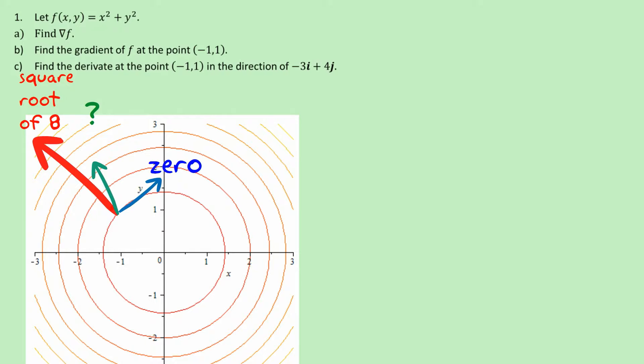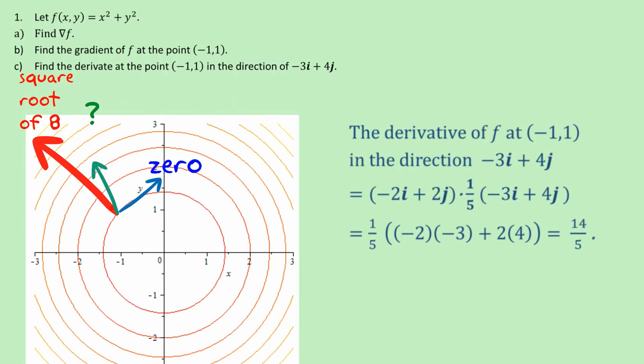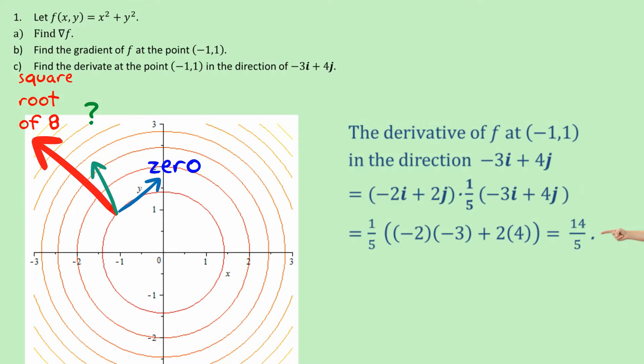So the derivative at the point (-1,1) in the direction of (-3,4) is, well we take the -2i plus 2j and we take the dot product with the unit vector in the direction (-3,4). Now this vector (-3,4) has length 5, so the unit vector will be one-fifth of -3i plus 4j. And when we work all of that out, which I've got somewhere, it turns out to be 14/5 or 2.8, which is just less than the square root of 8, which we worked out in part b, which is what you would expect - that it should be close to but less than the answer in b.